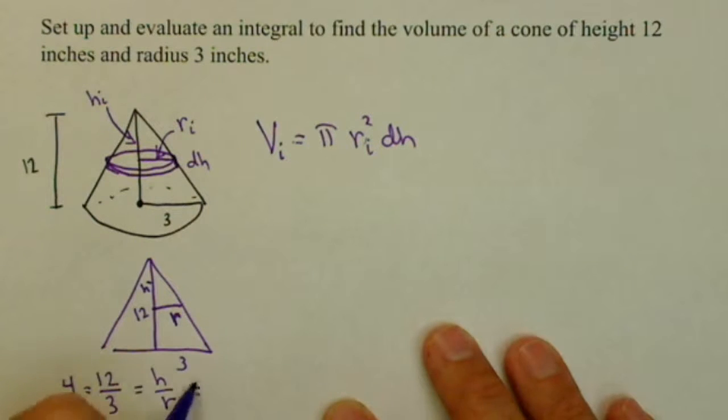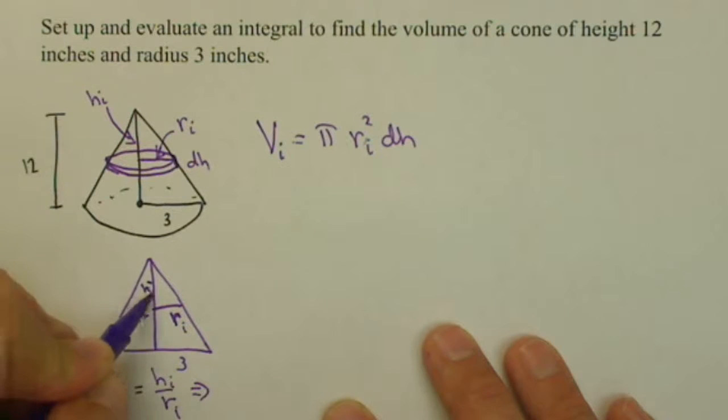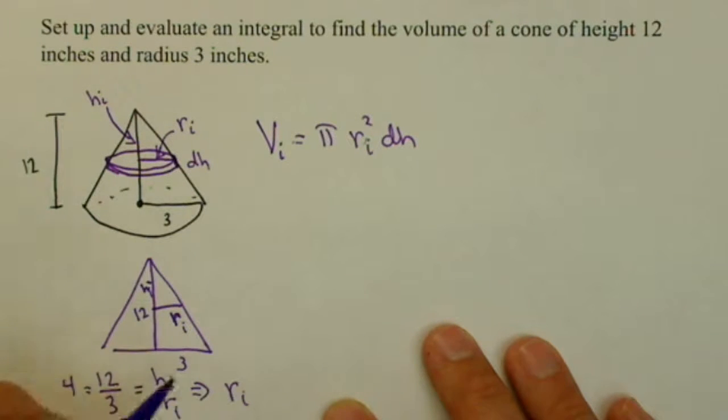I want to solve this for R. Sorry, I should be using sub i's there to be accurate. So, R sub i, if I cross multiply, think of that as 4 over 1, multiply the R sub i up here, but also multiply the 4 down there, equals H sub i over 4.